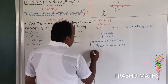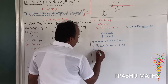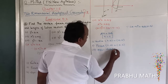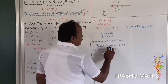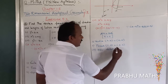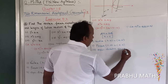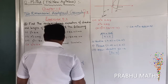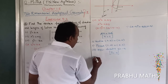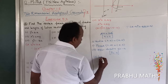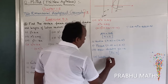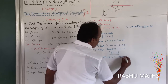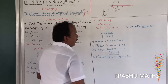Third, equation of the directrix: for an upward open parabola, the directrix is y equal to minus a, so y equal to minus 6. Fourth, length of the latus rectum is 4a equal to 24. Second subdivision is fully complete.